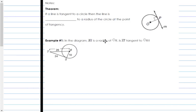First up, if a line is tangent to a circle, then the line is perpendicular to a radius of the circle at the point of tangency. It's perpendicular, meaning it forms a 90 degree angle. So, since a 90 degree angle was formed with the radius and the line, that means this line is a tangent.